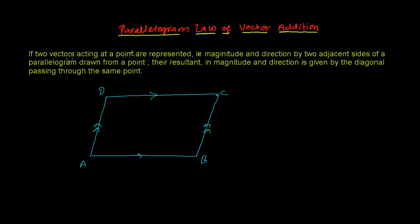If two vectors are acting at a point — let's say the two vectors are acting at this point — they are represented in magnitude and direction by the two adjacent sides of the parallelogram. So two adjacent sides: one is this side and another is along this side. These two adjacent sides represent two vectors. Let's say this is vector P and this is vector Q.